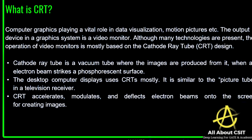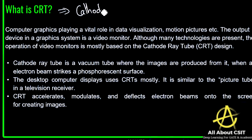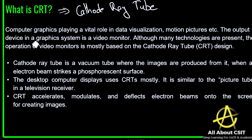The full form of CRT is: C means Cathode, R means Ray, T means Tube — so it is a cathode ray tube.